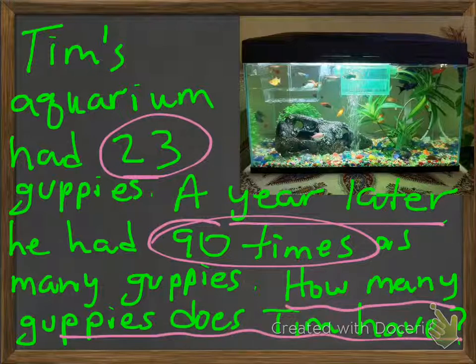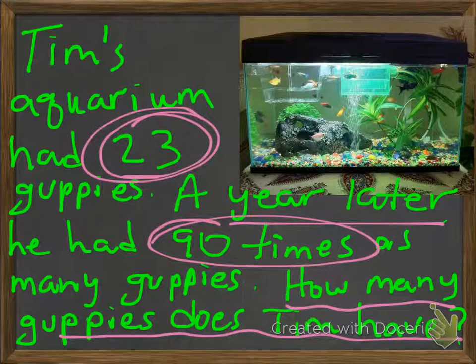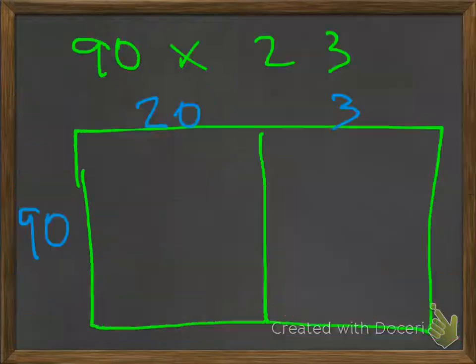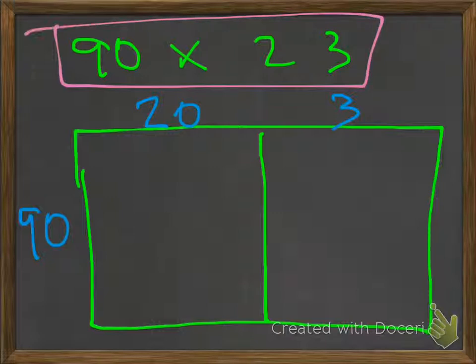So again, he starts off with 23 guppies, and a year later we get 90 times as many as he started with. So again, the question is: how many guppies does Tim have now? Well, we can try it this way — it's 90 times 23. That's the regular algorithm way.